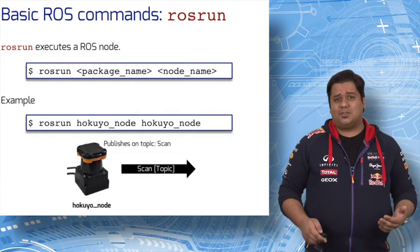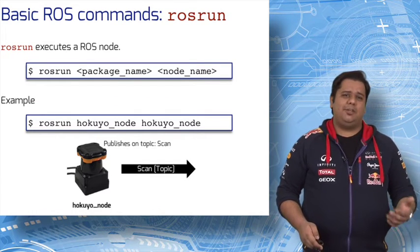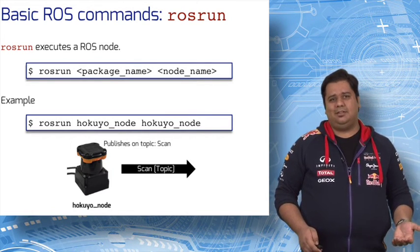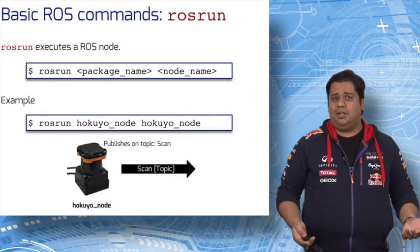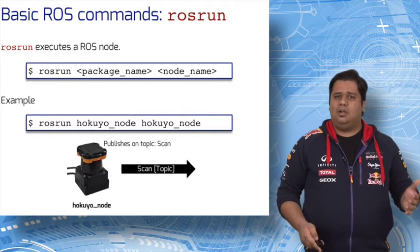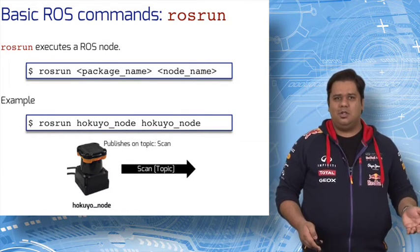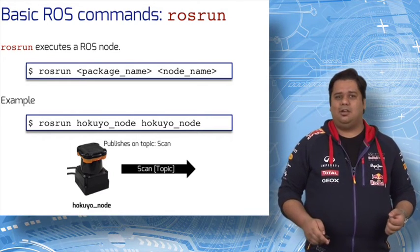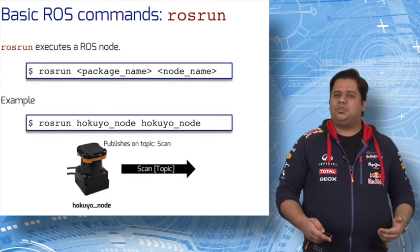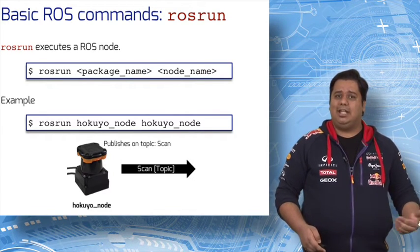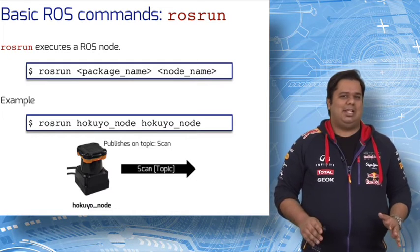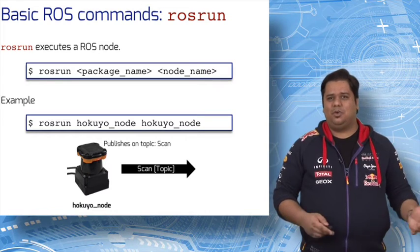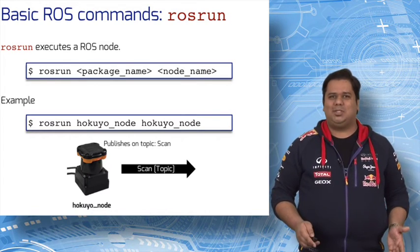The next command, called ROS-run, allows you to run an executable in an arbitrary package from anywhere without having to give its full path. For example, typing ROS-run hokoyu-node hokoyu-node will start the execution of the hokoyu-node, which was the LiDAR node. That will allow us to use the LiDAR range sensor and get data from it. It just happens to be the case that both the package name and the node name are the same — hokoyu-node — but that will not always be the case.